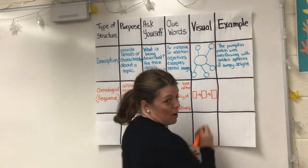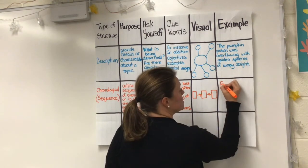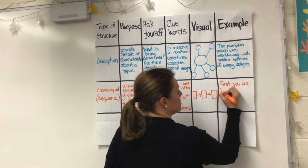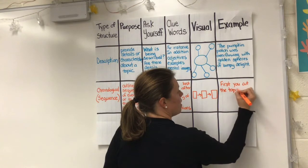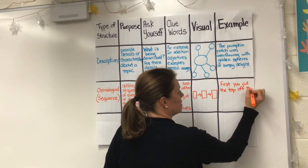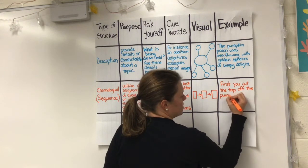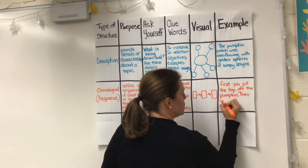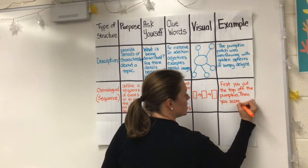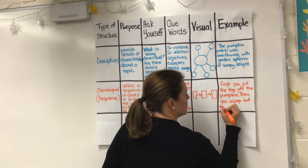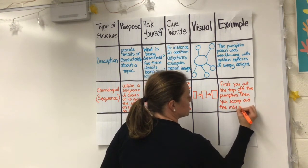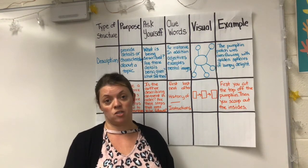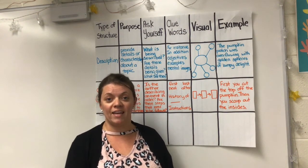An example would be about carving a jack-o-lantern. First, you cut the top off the pumpkin. What do we do after we cut the top off the pumpkin? Now it's the gross part. Then, you scoop out the insides. Now that you've learned a little bit more about chronological or sequence text structure, go ahead and check out the article and answer some of the questions.